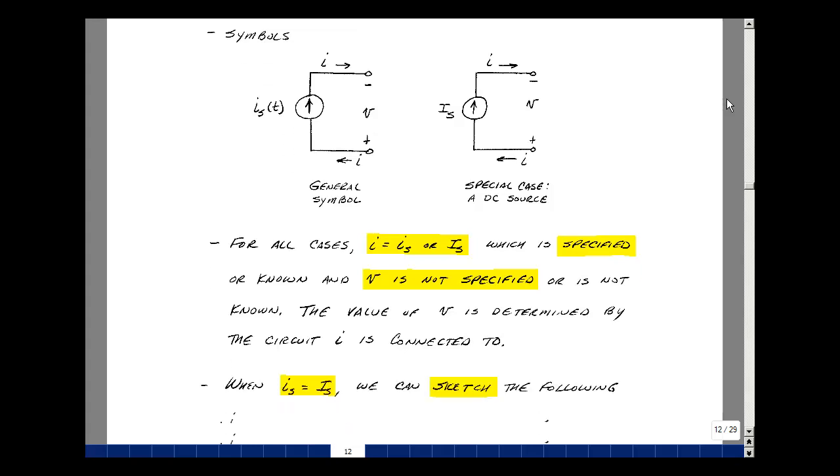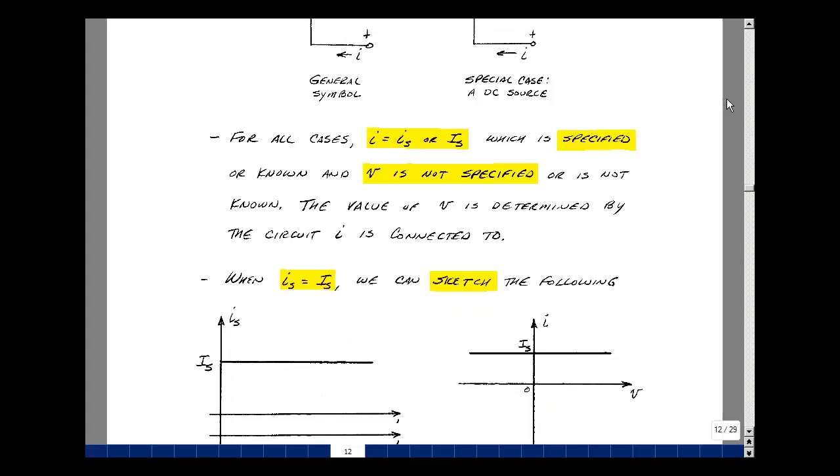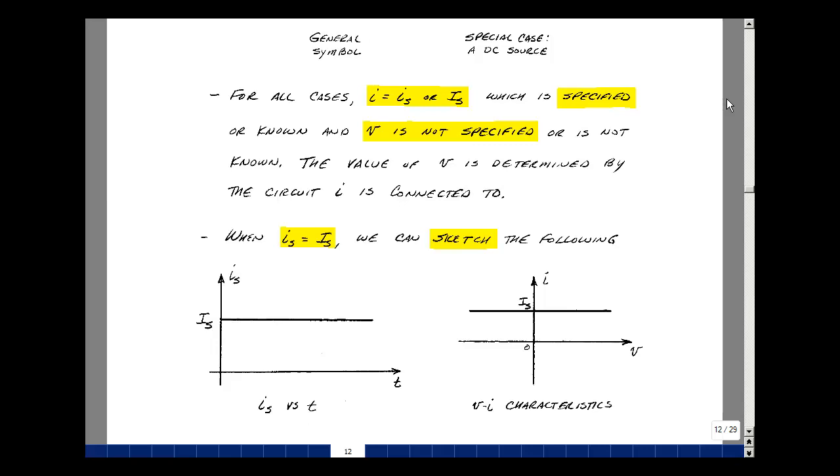Now, if I sub s were constant versus time, we could sketch that as simply maybe 12 milliamps versus time. But then you could also plot voltage versus current. And again, these are very handy graphs when we get to electronic components like diodes and transistors.